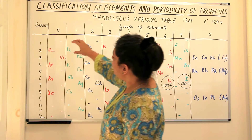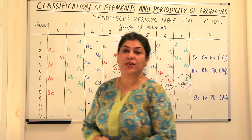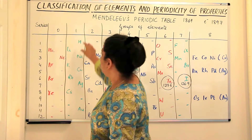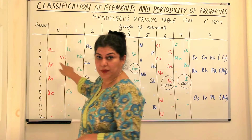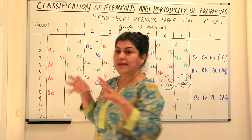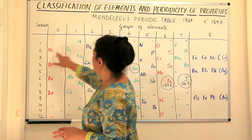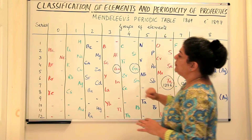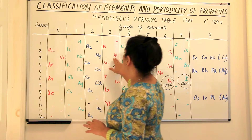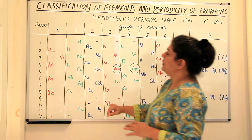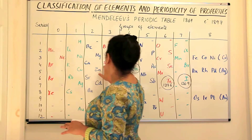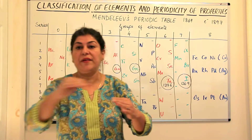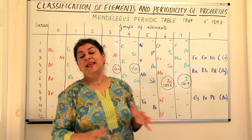He arranged the elements according to their increasing atomic masses, with every row having two elements each. Hydrogen had the least mass, followed by helium, lithium, beryllium, boron, carbon, nitrogen, oxygen, fluorine, neon, sodium, magnesium, aluminum, silicon, phosphorus, sulfur, chlorine, argon, potassium, calcium, scandium, titanium, vanadium, chromium — all arranged in order of increasing atomic masses.